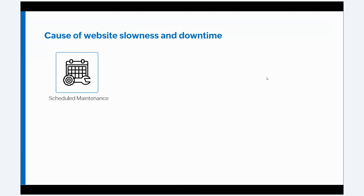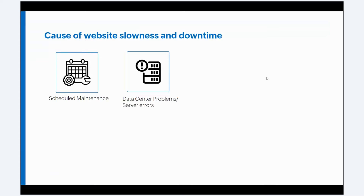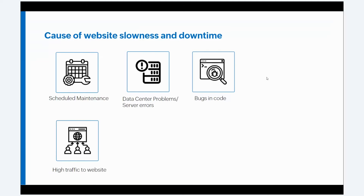Scheduled maintenance is a temporary period in which a site or an app is made offline or inaccessible for updates, backups, or maintenance purposes. Data center problems or internal server errors — if there's a data center problem or a server error, the request from the user may not even reach the server. Bugs in website code may cause errors and prevent the site from loading or might cause very slow loading. High traffic — if too many people are trying to access the website at the same time, it may not be able to handle the load. Hacking attempts — hackers trying to pull any suspicious activities on your site can cause it to go down or become slow.